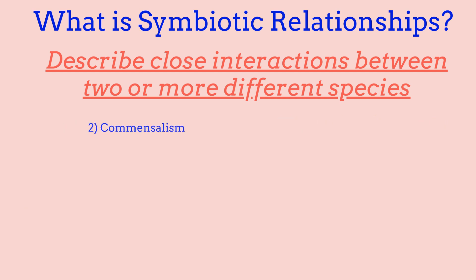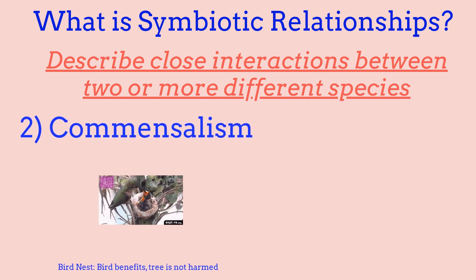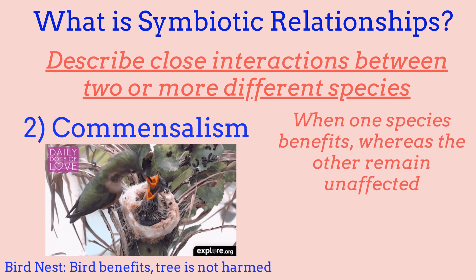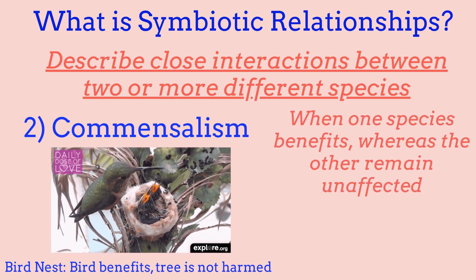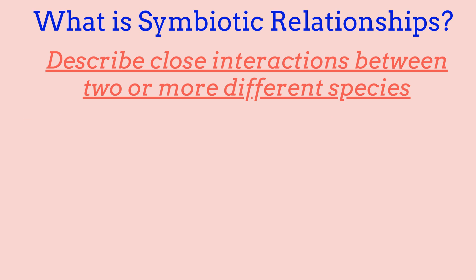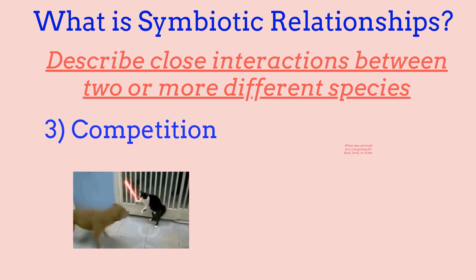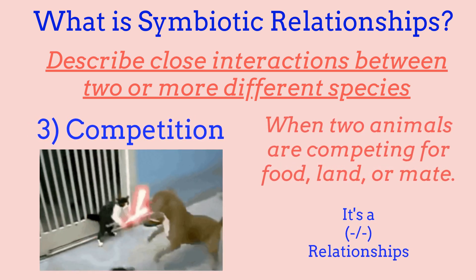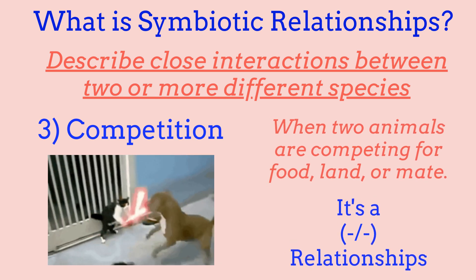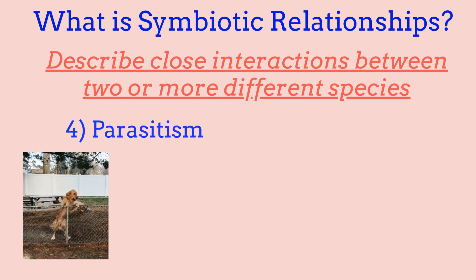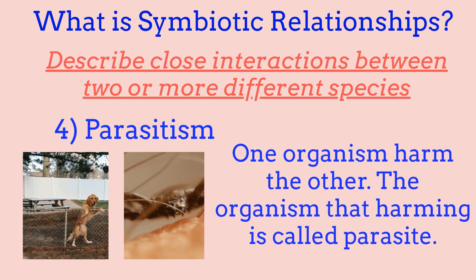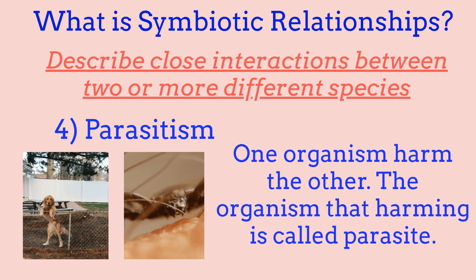Commensalism is a plus-to-zero relationship — for example, during a test your friend copies your answers, which benefits your friend but doesn't affect you. Competition is a minus-minus relationship, where two animals compete for food, land, or a mate. Finally, parasitism involves a parasite benefiting while the host organism is harmed — examples include a dog and a tick, or people and mosquitoes.